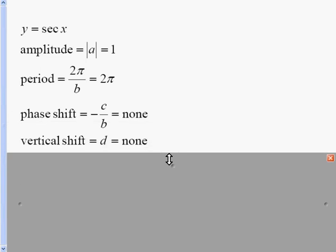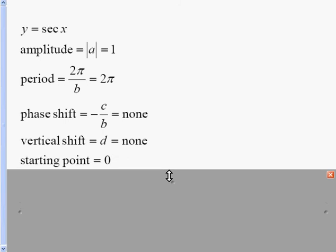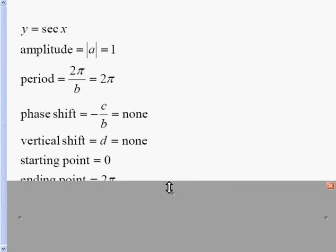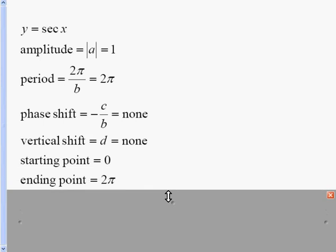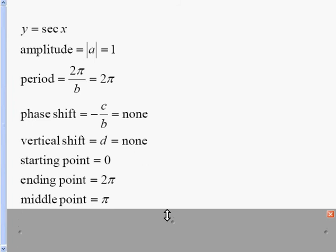When I was graphing the cosine curves, I like to get myself a starting, middle, and ending point. My starting point, since there is no phase shift, is 0. To find my ending point, I add the period to it, so 0 plus 2π is 2π. And then my middle point is halfway between them.